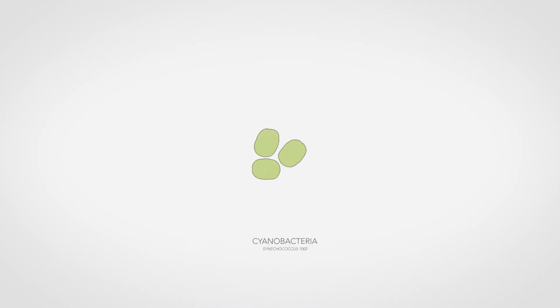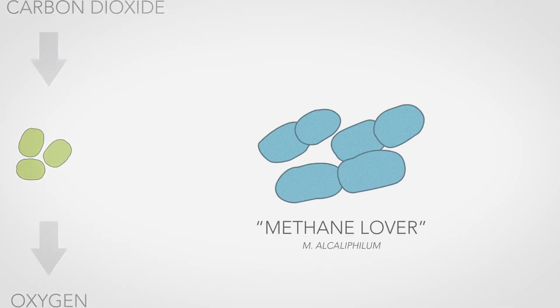The principle behind the co-culture technology is metabolic coupling. On one hand, you have a cyanobacteria. It's a photosynthetic organism that uses light to make oxygen. On the other hand, you have a methane oxidizer. It consumes methane and uses oxygen to do it.